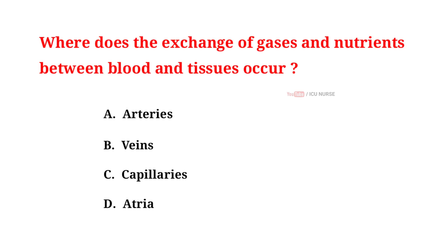Where does the exchange of gases and nutrients between blood and tissues occur? A. Arteries. B. Veins. C. Capillaries. D. Atria. And the correct answer is C. Capillaries.